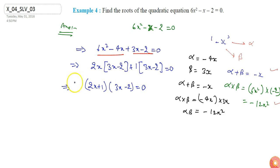So we know that if a into b equals to 0 then either a will be 0 or b will be 0. So here if I use this basic algebraic identity, either 2x plus 1 would be 0 or 3x minus 2 would be 0. Or I can say x from here I can write x equals to minus 1 by 2 and from here x will be 2 by 3.